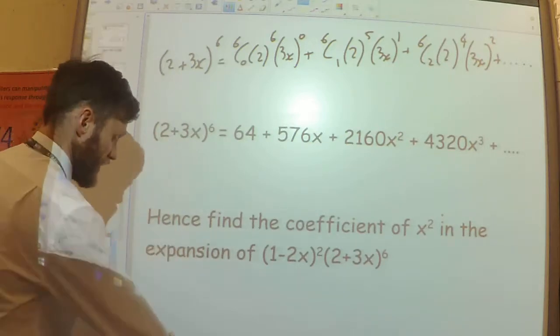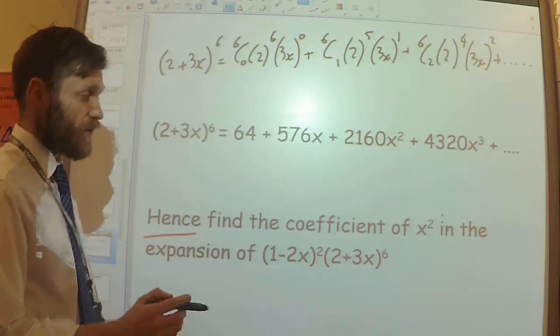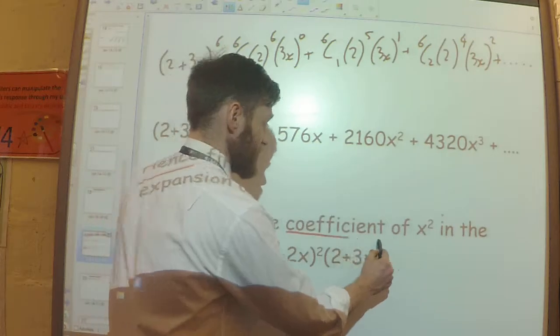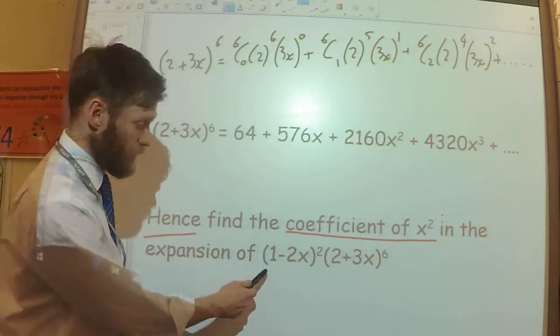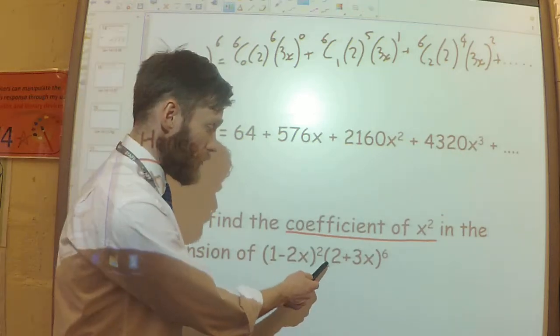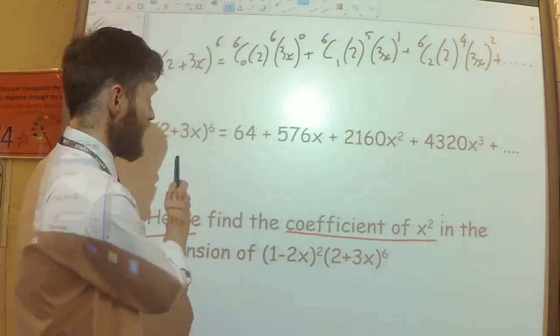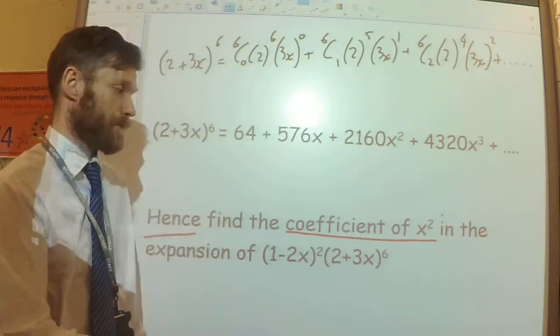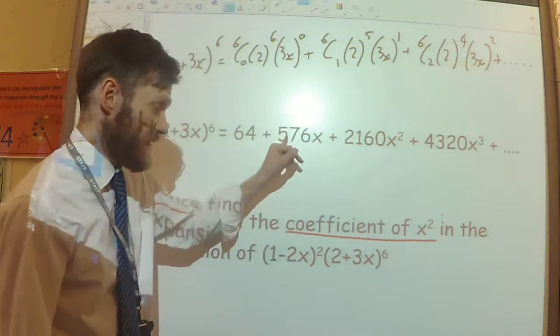Part B of the question might say, hence, find the coefficient of x squared in the expansion of 1 minus 2x squared multiplied by 2 plus 3x to the power 6. This I've already expanded. It's this.